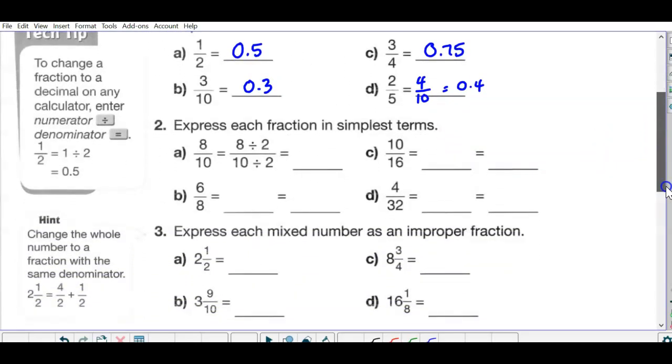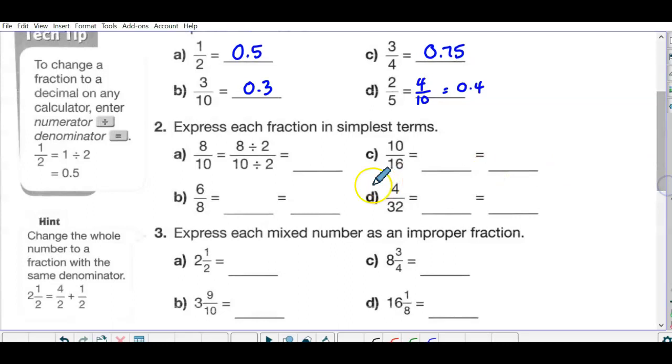Next one, express each fraction in simplest form. Try these without. So you want to look for the greatest common factor between the numerator and denominator. So here this has already started for you. Divide by two, so that would be four fifths. Here both of them are even so that means at least try two if not something bigger. So I've kind of shown my work already there, so the answer is three fourths.